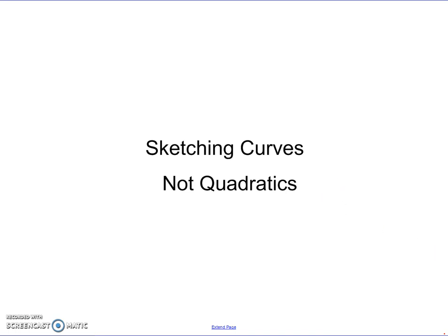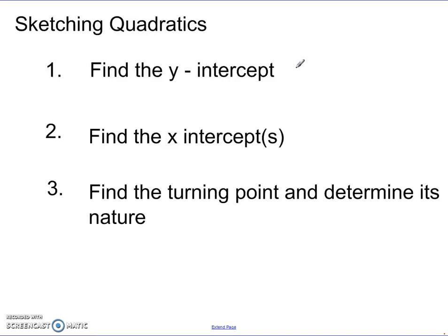Think back to National 5 when we did quadratics. There were three key bits of information we needed to accurately sketch it. First, we had to find the y-intercept. Then we had to find the x-intercepts — sometimes there were none, sometimes one, sometimes two. Finally, we had to find the turning point and determine its nature. A quadratic had one single turning point, either a maximum or a minimum.